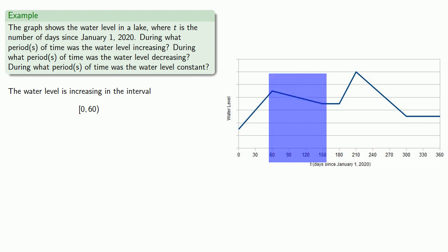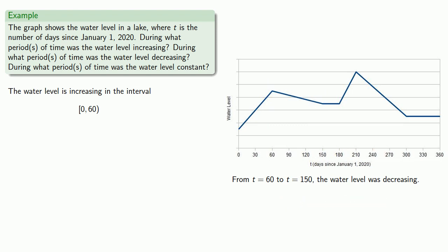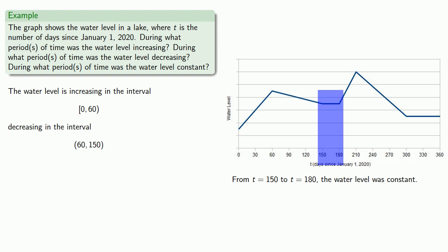From t equals 60 to t equals 150, the water level is decreasing. Since neither 60 nor 150 is the beginning or the end of the graph, we exclude both endpoints, so the interval is (60, 150) using parentheses. From t equals 150 to t equals 180, the water level was constant. Again, these are not endpoints of the graph, so we write the constant interval as (150, 180), excluding both endpoints.